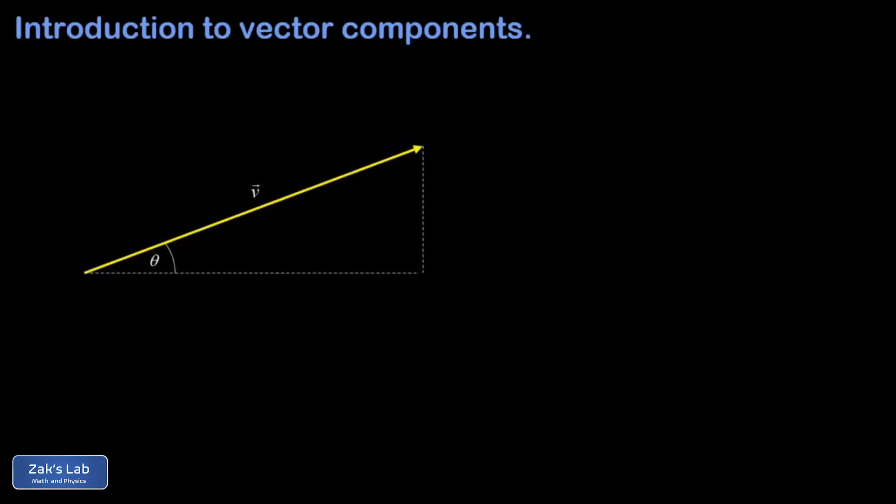In this video we established that any vector can be written as a sum of vector components, and we learned to convert between the component form of a vector and the polar form of a vector.